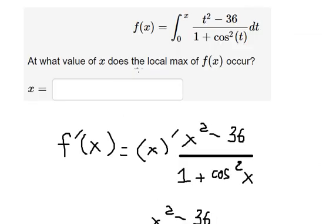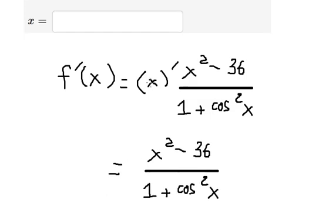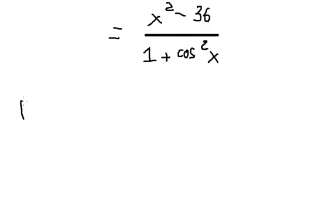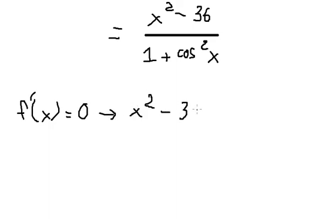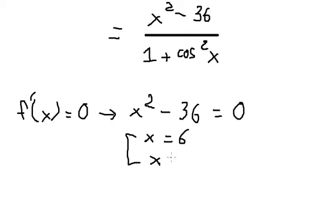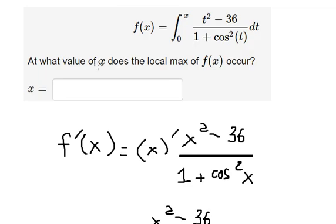Now we want to find the local maximum, so we need to set the first derivative of the function equal to zero. So we get s squared minus 36 equals zero, and we have two solutions: s equals positive six and s equals negative six.